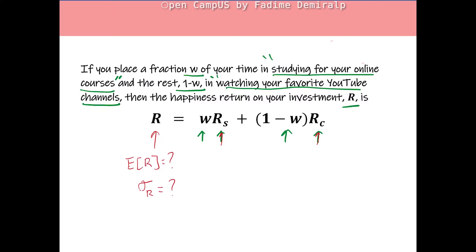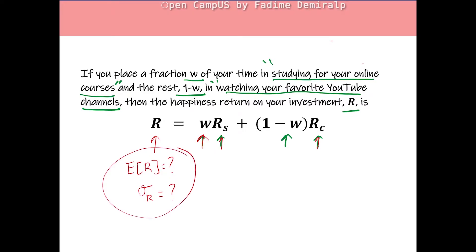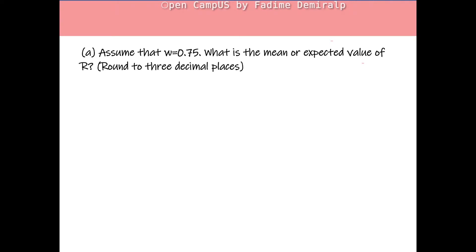If we know what portion W you put into studying, we can compute the mean and standard deviation of R. Suppose you invested 75% of your time into studying — assume W is 0.75. What is the mean, or expected value, of R?